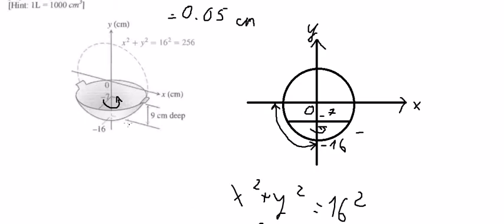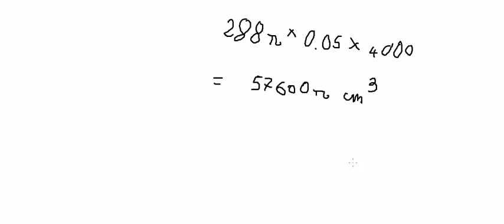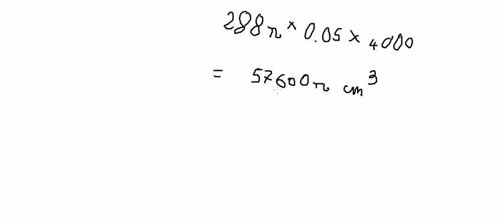The question asks to convert 1000 cubic centimeters into 1 liter. So we divide by 1000, and we got about 57.6 pi liters.